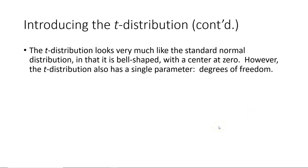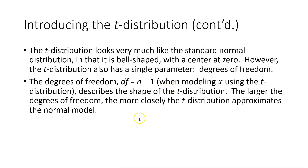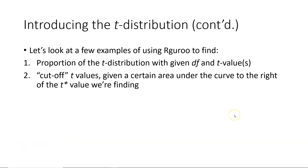The t-distribution looks very much like the standard normal distribution in that it is bell-shaped with a center at zero. However, the t-distribution also has a single parameter associated with it, namely the degrees of freedom. The degrees of freedom for single samples is equal to the sample size minus one. The larger the degrees of freedom, the more closely the t-distribution approximates the normal model. In the preview for section 7.1 you were given some practice sketching t-distribution curves.